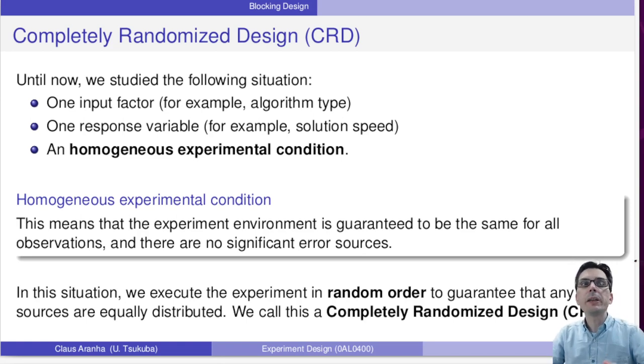In this situation we execute the experiment in random order to guarantee that any error sources are equally distributed. So for instance, let's say that we are comparing three different algorithms and we are going to repeat each algorithm 20 times. There are 60 runs, and when we are executing the runs to guarantee fairness, we randomize which algorithm we execute at each run. This is called completely randomized design.